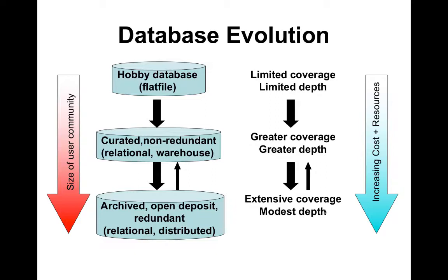The final evolution of many databases is going from a hobby database to a fully archived, open deposition — often redundant — database. This is what GenBank is, what the Protein Data Bank is, what Metabolights is. These are relatively large databases, measured in gigabytes, where users deposit their data rather than curators entering it by hand. Only very large, publicly funded centers can generally maintain archived databases. Most laboratory-developed databases end up being more curated databases.